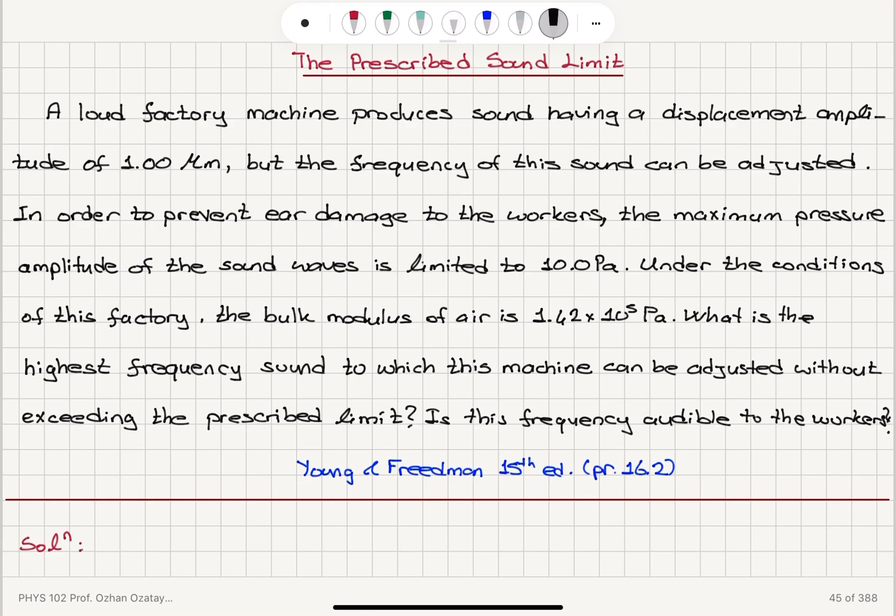Now let's recall that sound waves can be described in terms of displacement as delta S as a function of x and t. The wave function is equal to the maximum displacement delta S max cosine kx minus omega t, a traveling wave to the right.